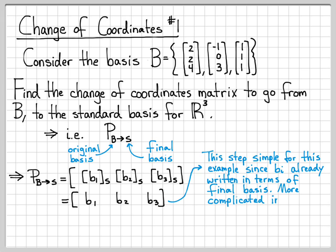In general, though, it would be more complicated if we wanted to go from a basis B to a basis A, where A was not the standard basis. So the change of coordinates matrix has B1 = (2, 2, 4) as the first column, B2 = (-1, 0, 3) as the second column, and B3 = (1, 1, 1) as the third column. I claim that this is the change of coordinates matrix that will let me take any vector written with respect to the basis B, multiply it by this matrix, and end up in the standard basis.